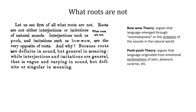Let us see first of all what roots are not. Roots are not either interjections or imitations of natural sounds. Interjections such as ku and imitations such as bow-wow are the very opposite of roots. Why? Because roots are definite in sound but general in meaning, while interjections and imitations are general — vague and varying in sound — but definite and singular in meaning.